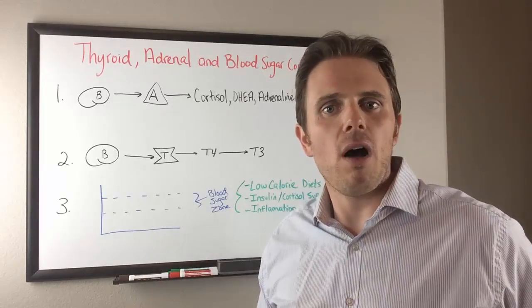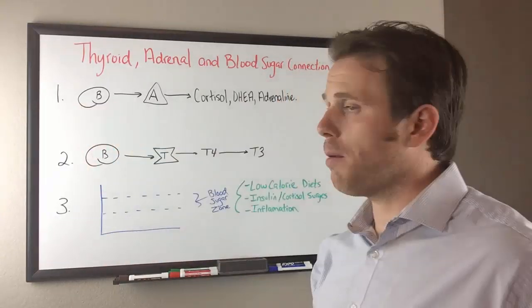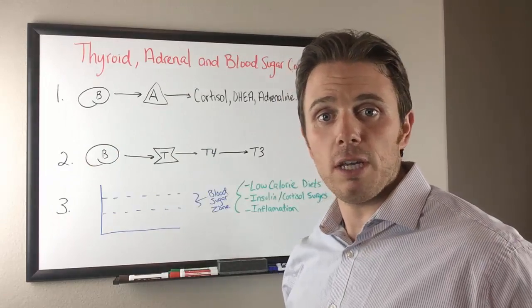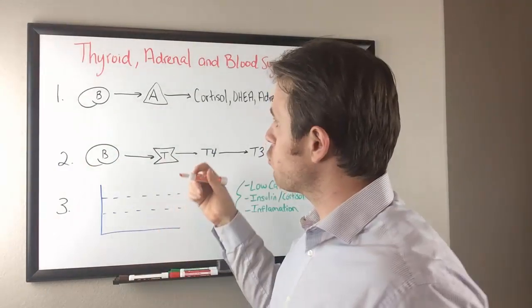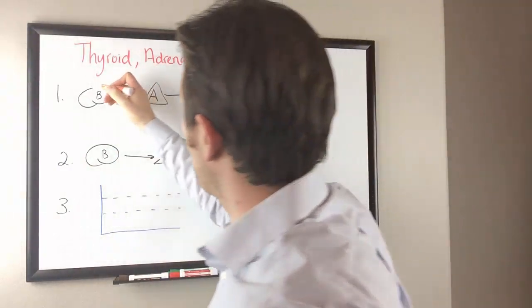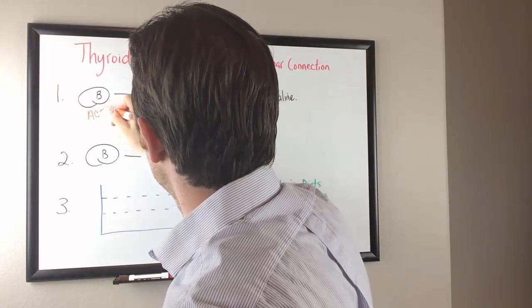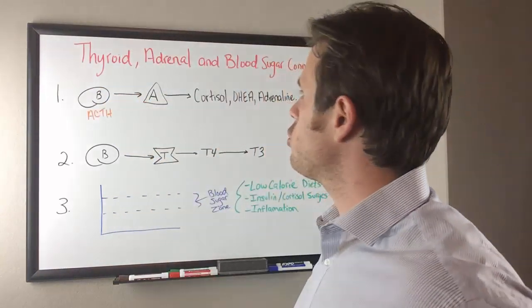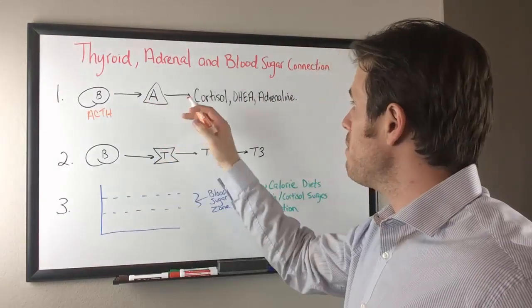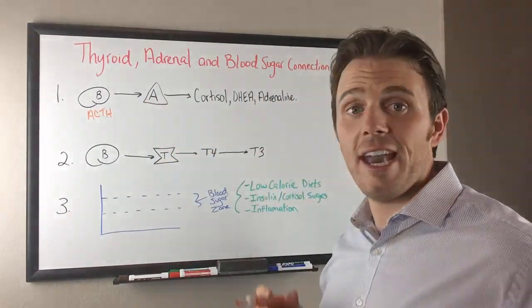Let's review how the whole system works. We have our brain. Our brain is essentially producing ACTH or adrenal corticotropic releasing hormone. That then talks to our adrenal glands right here to make cortisol, DHEA, and adrenaline.